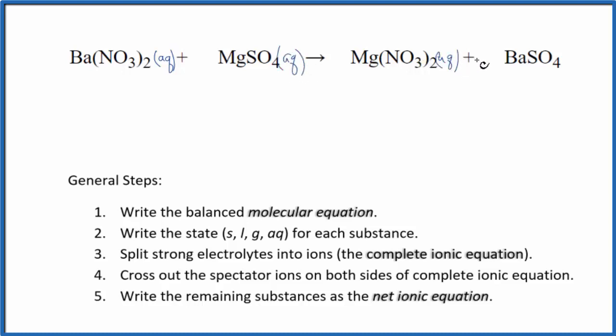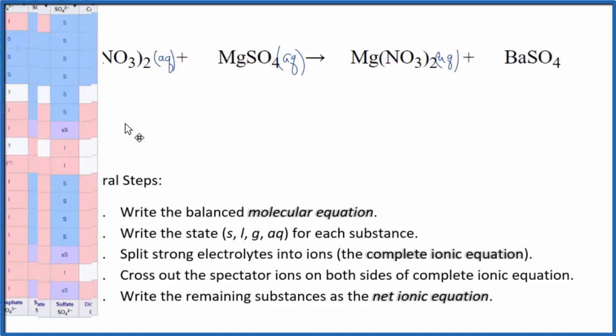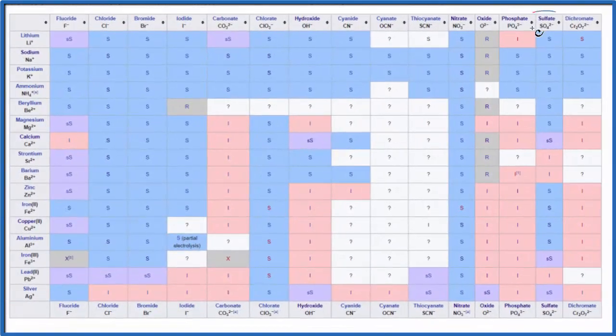We said that sulfates in general are soluble. Barium is a bit of an exception, so let's check this solubility table here. We can see sulfates here, most of them, that S means they're soluble. These two here and down here, that I means they're insoluble.